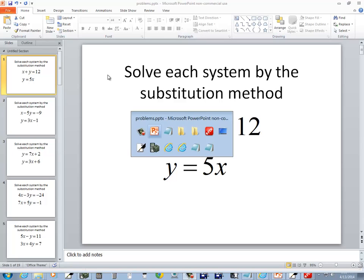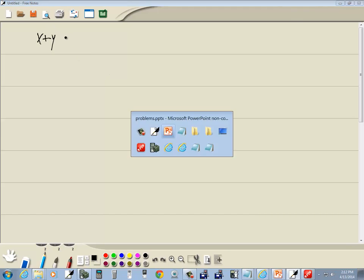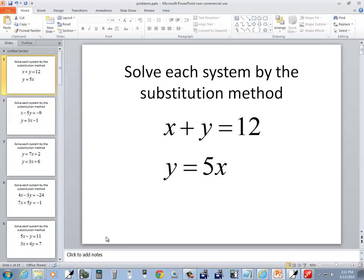Let's take a look at this problem. We have x plus y equals 12 and y equals 5x. We need to solve this by substitution method.